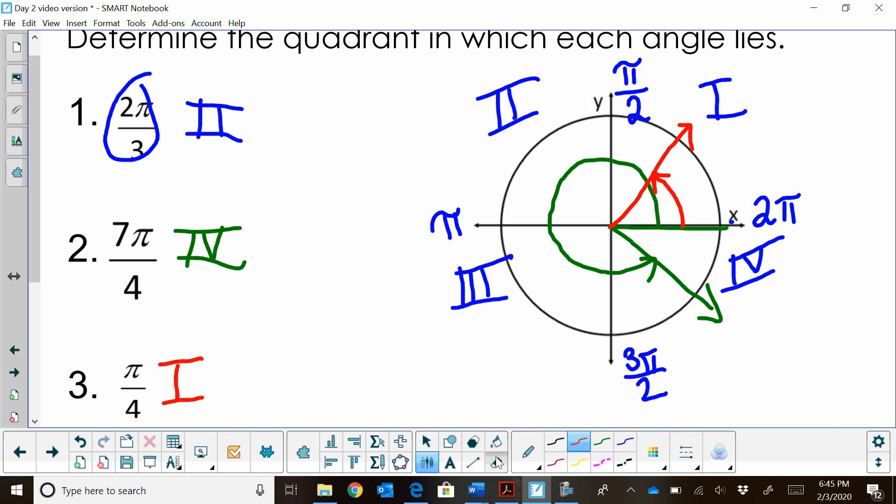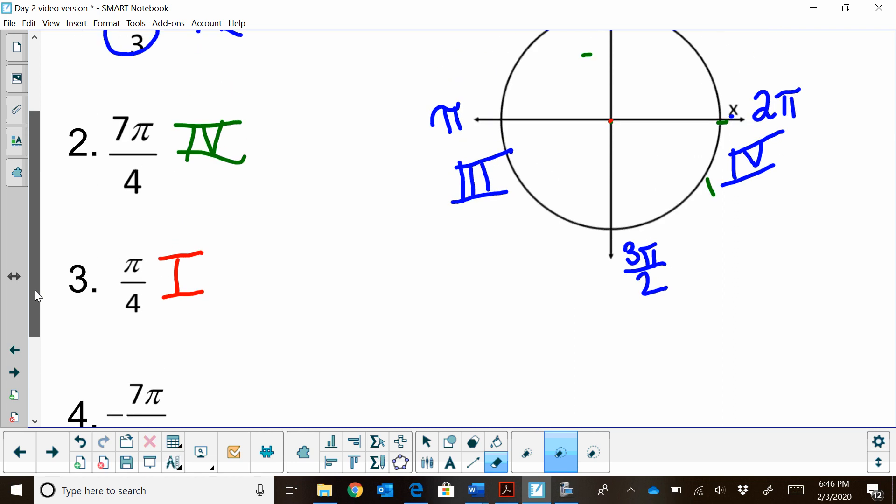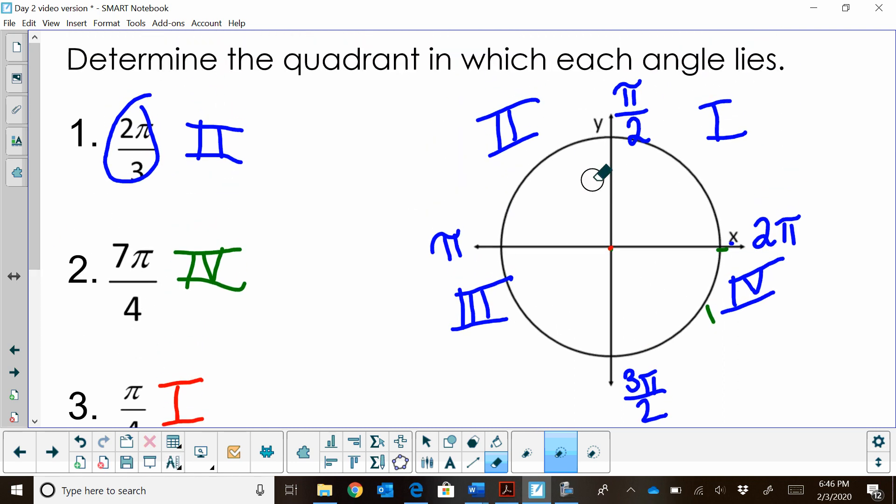We're going to look at one more, and the last one is just a little bit different. Let me erase this so we have room to write it. The last one we're going to look at is negative seven pi six. Now, what does a negative do?